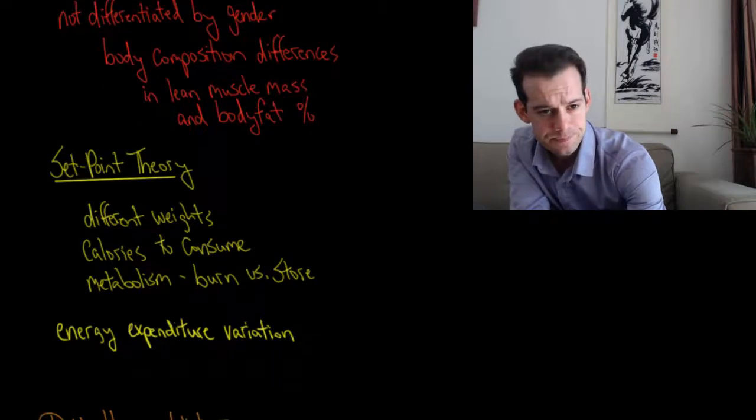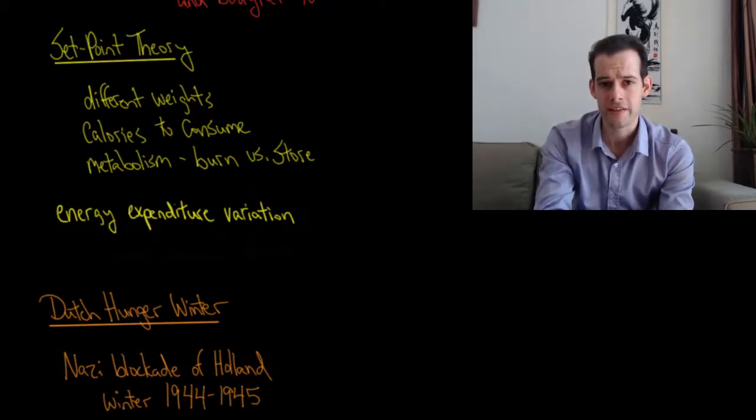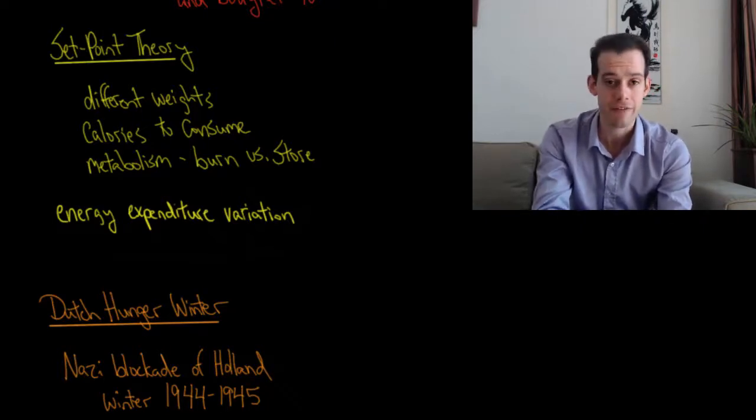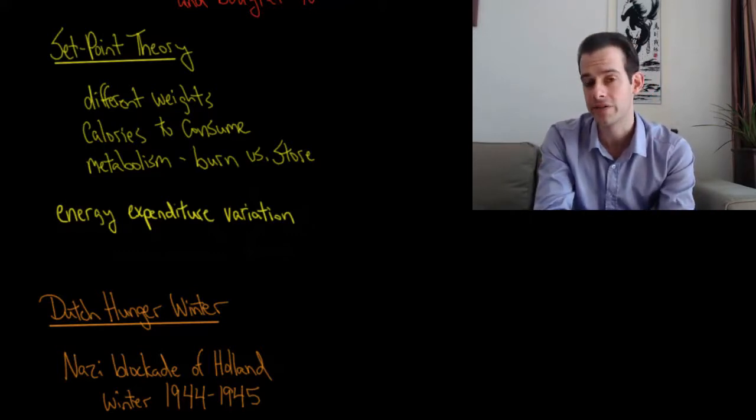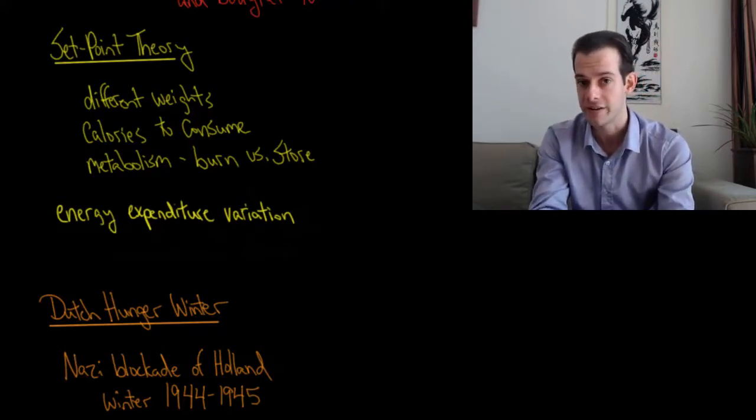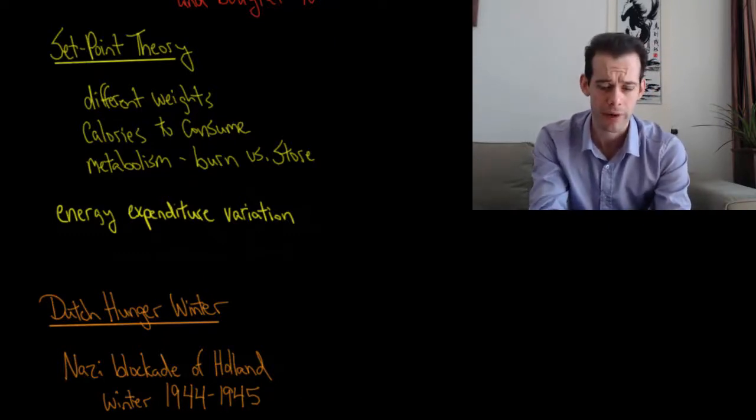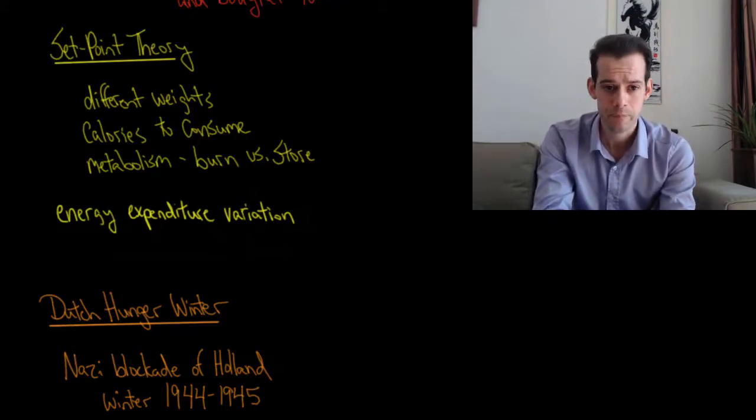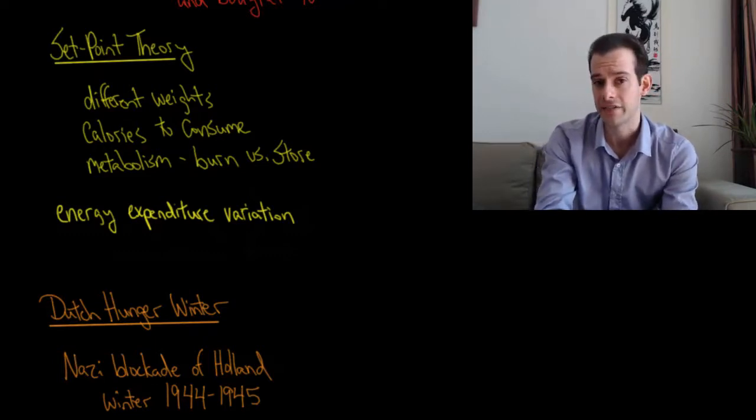Another idea related to obesity is called set point theory. This is the idea that our bodies have different weights that we want to maintain. We have a certain set point for a body weight that each of us, our body is sort of working to maintain that particular weight or set point, and this is going to influence our levels of motivation for how many calories we should consume. If somebody has a higher set point, they're going to be motivated to consume more calories to reach that point, whereas somebody else may have a lower set point and so it might be easier for them to consume fewer calories and maintain a lower body weight.